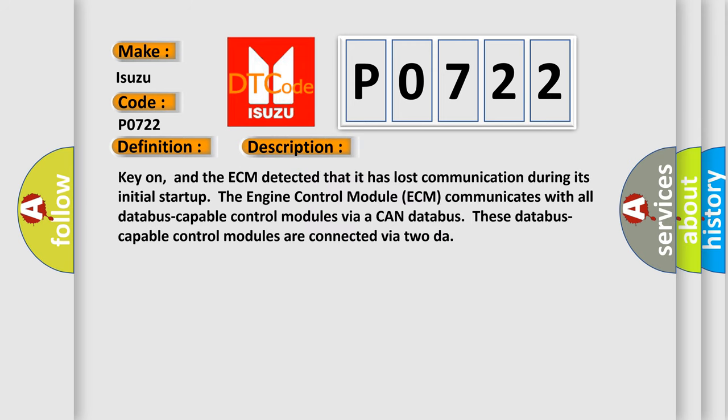Key on, and the ECM detected that it has lost communication during its initial startup. The engine control module ECM communicates with all database-capable control modules via a CAN database. These database-capable control modules are connected via 2DAR.